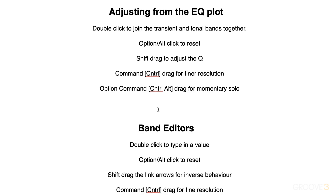When working in the band editors at the bottom, double-click to enter a value. Option or Alt-click to reset. And a really cool feature: use those link arrows to move both together, but hold Shift and they'll move in inverse directions — really interesting for exploring sound design possibilities. Also in the band editors, Command — that's Control on Windows — drag for finer resolution. I'll see you for more in the next video.